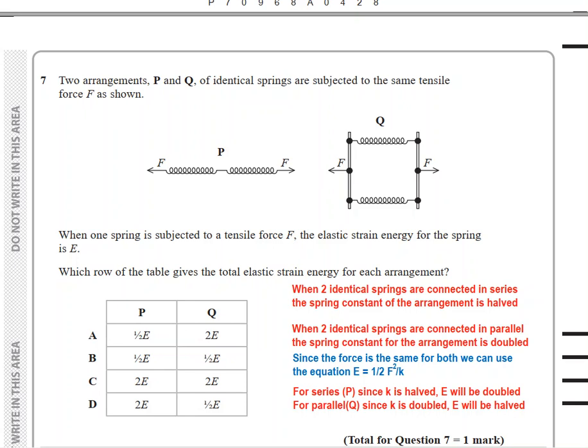When two identical springs are connected in parallel, the spring constant for the arrangement is doubled. Since the force is the same for both, we can use the equation e equals half F squared by k. For series, since k is half, e will be doubled. For parallel, since k is doubled, e will be halved. Answer is D.